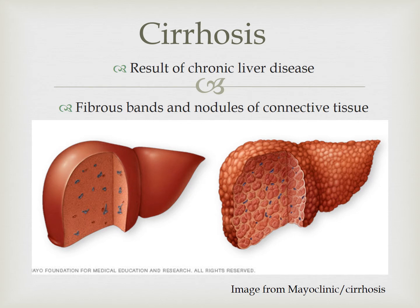Cirrhosis is considered the end stage of a variety of chronic liver diseases. Extensive damage and destruction of hepatocytes occur in response to various causes of liver injury, and fibrotic bands and nodules of connective tissue give the liver a cobbled appearance. Changes in the vascular system and lymphatic bile duct channels result from compression caused by the proliferation of fibrous tissue.